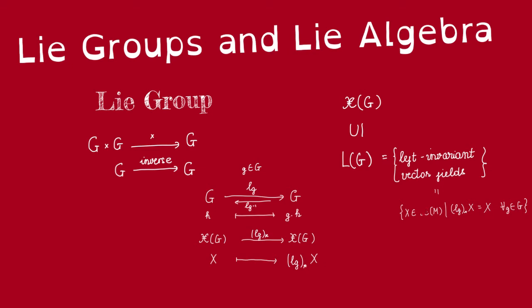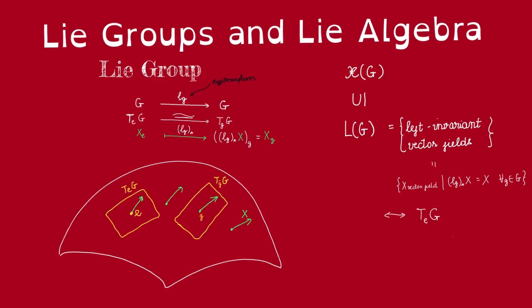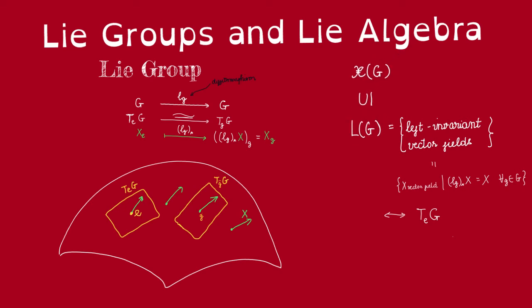We can actually drop the condition that the vector field has to be smooth, because if a vector field is left invariant it must be smooth. We will prove this in the next video — we will show that left invariant vector fields are necessarily smooth.